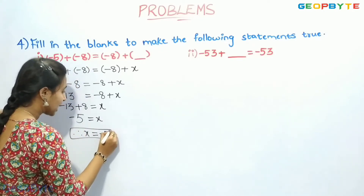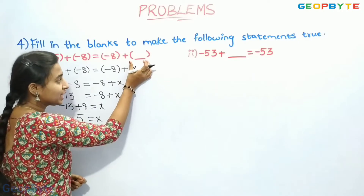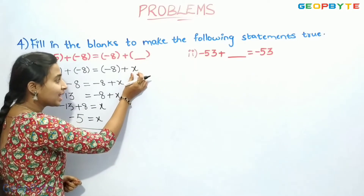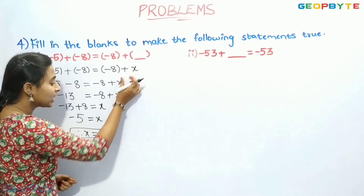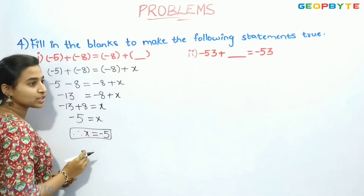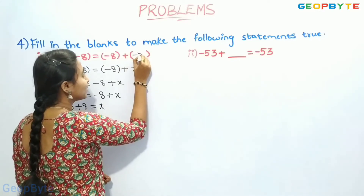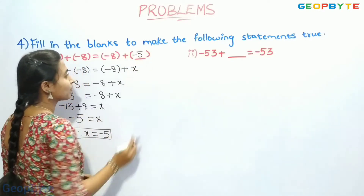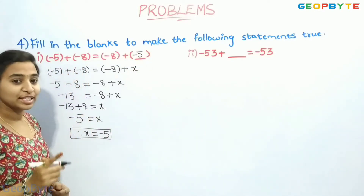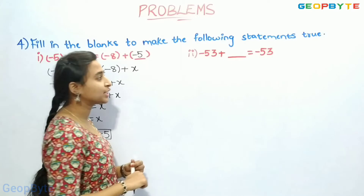Therefore, we got x is equal to minus 5. As we assumed this missing integer as x, we got x as minus 5. Let us write that here. Similarly, we will see the next problem.